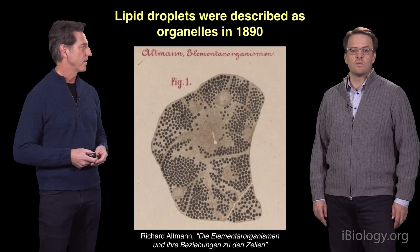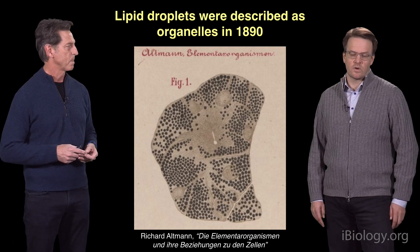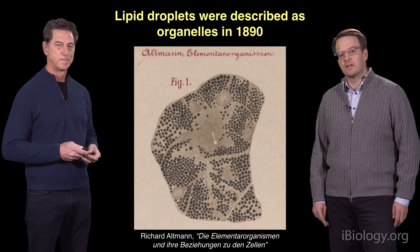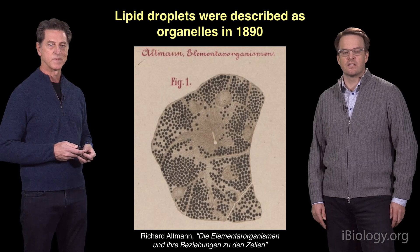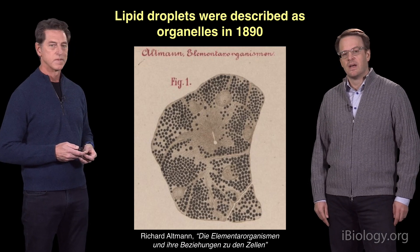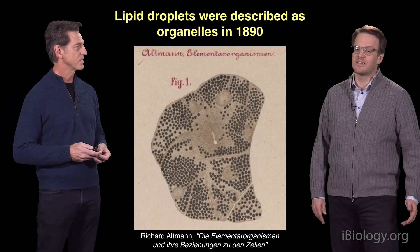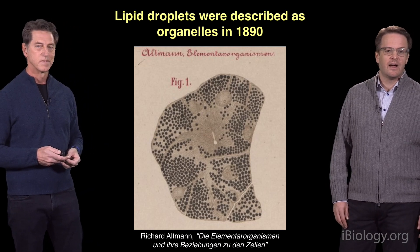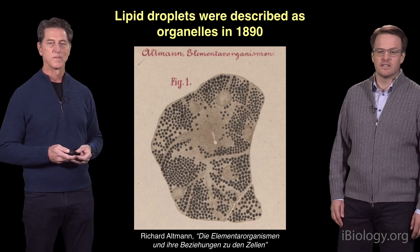As a consequence of these somewhat unique properties, lipid droplets were about the first organelles to be discovered. Because oil and water diffracts light, Richard Altman was able to observe lipid droplets — in this case in frog liver cells, where you can see the densely stained lipid droplets. He's also the person who discovered bioblasts, later termed mitochondria, and coined the term nucleic acid, or nucleine.